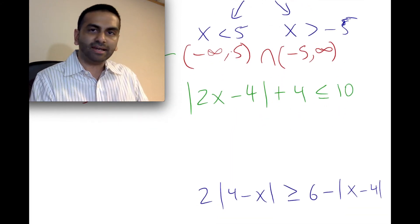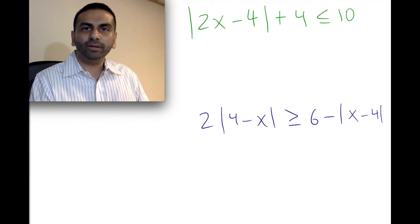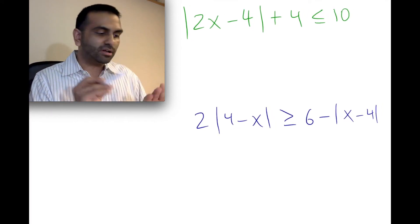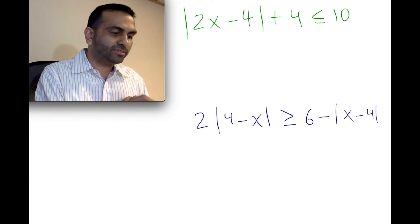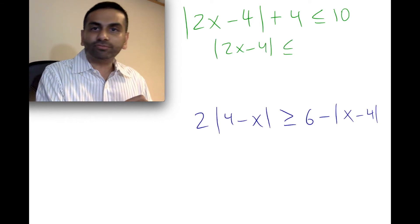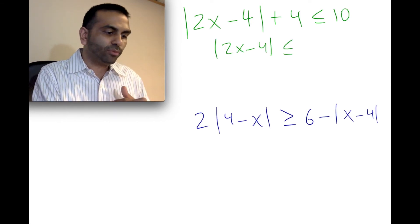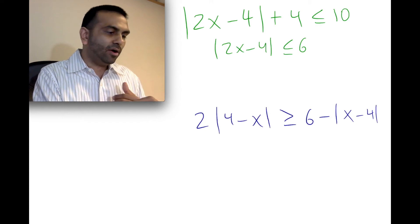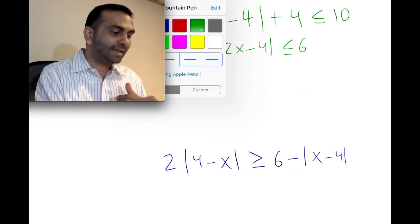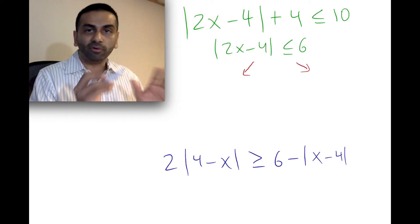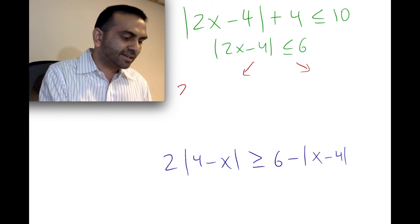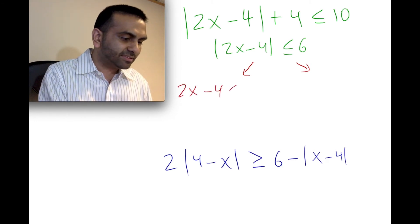Now let's look at another problem: the absolute value of (2x minus four) plus four, less than ten. We solve this the normal way — subtract four from both sides — giving us the absolute value of (2x minus four) less than six. For the first trajectory, just ignore the absolute value: 2x minus four less than or equal to six.